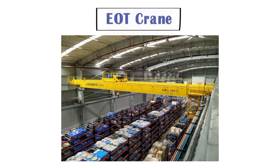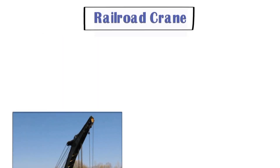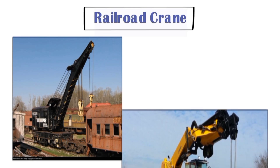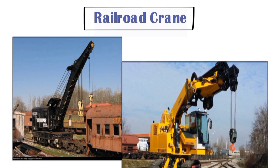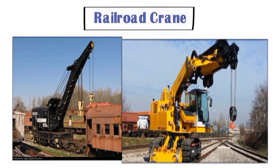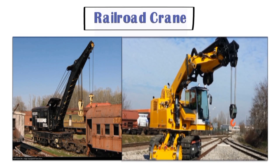Next comes the EOT crane, also called an overhead crane, as you can see in the picture. We use this crane in manufacturing or maintenance units. Next comes the railroad crane, which is fixed or installed on the rail. We mostly use this crane in railway workshops for rail installation, maintenance, or any activity related to rail where material has to be moved from one place to another.